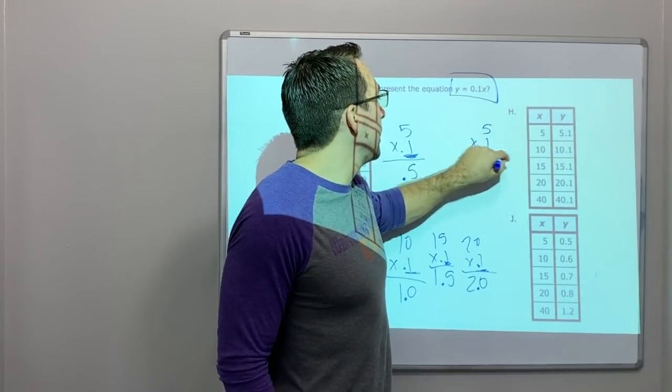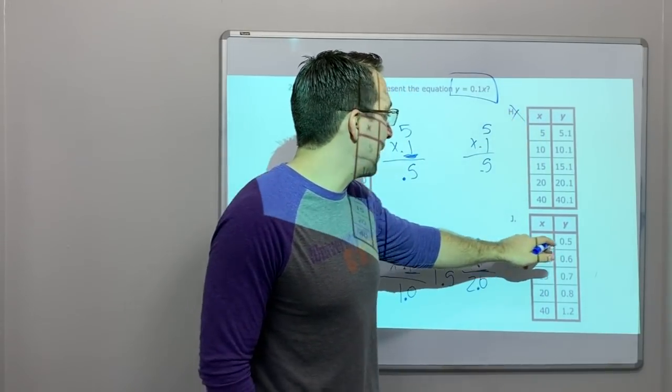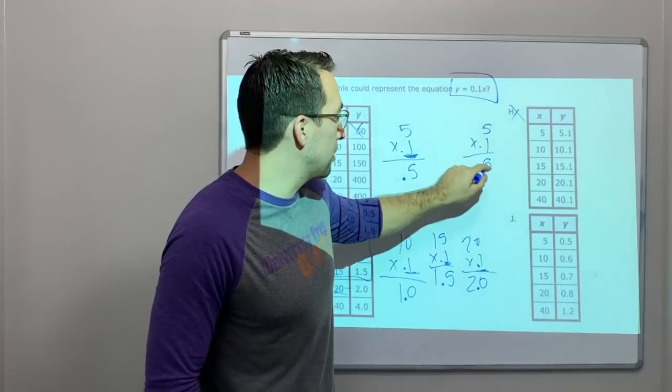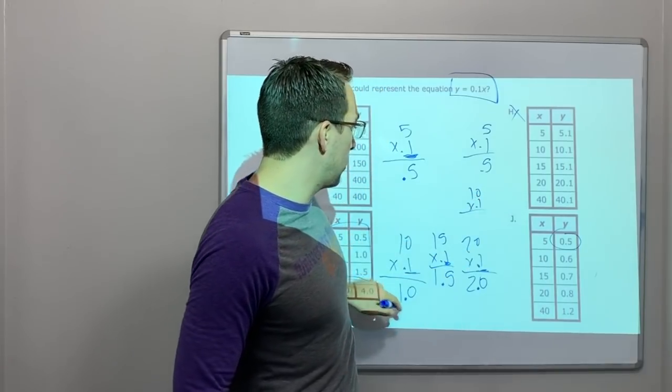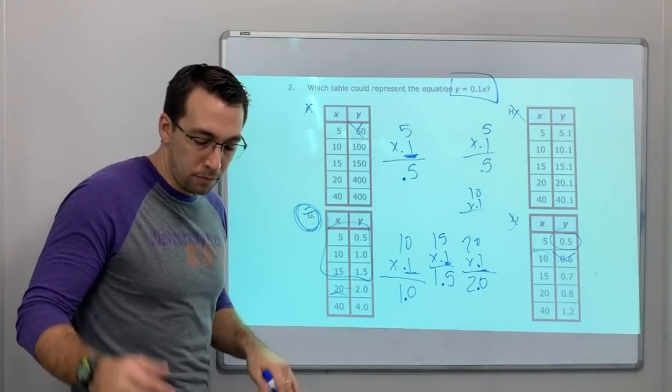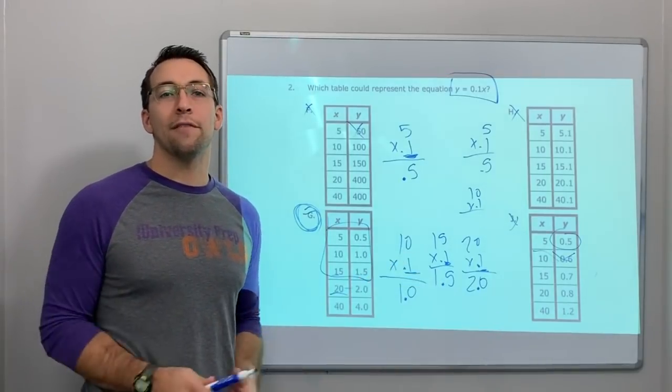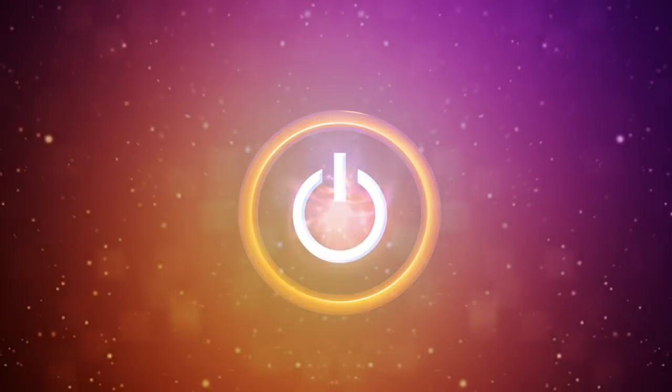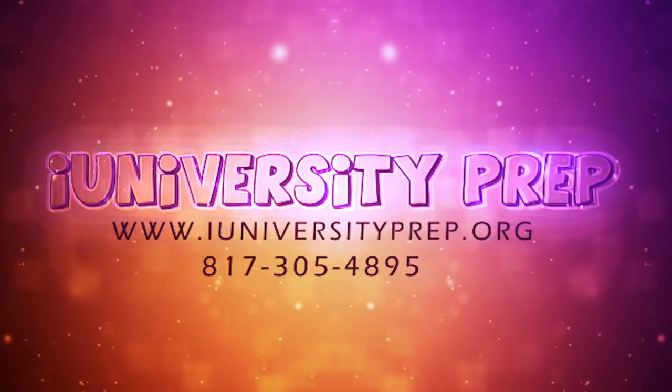5 times 0.1 is 0.5. That's wrong. See, look. 5 times 0.1 is, that one is, this is correct so far. 10 times 0.1. We already did it. It's 1.0. That's wrong. So our answer is G. Please do scratch work. Defend your work. Let me know if you have any questions, and I'm happy to help.